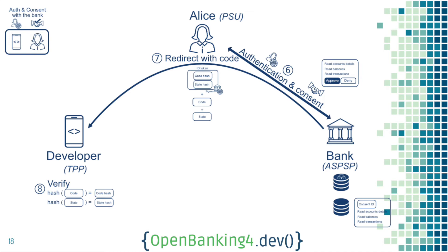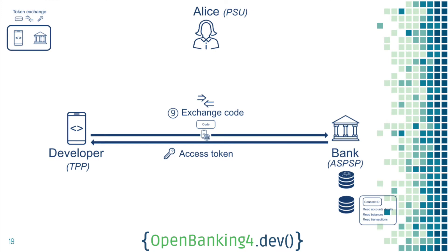The essential information is you get the code. Anyone can see the code in a way, but the important bit is that you are the only one able to exchange it for an access token. The reason is that you do this through MTLS, using your transport certificate as a credential. Only you can do that because you are the sole owner of the private key, so the bank can be sure the access token is only given to you. Even if Alice somehow obtained the code through the redirection, she can't do anything with it — only you have the key.